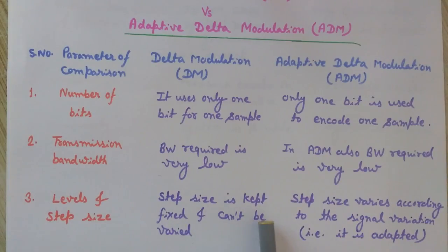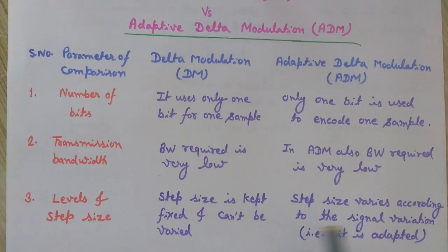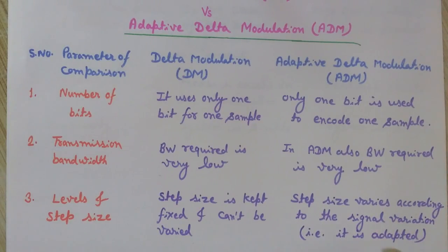The third point is the step size. In Delta modulation the step size is kept constant or fixed and is not varied, while in adaptive Delta modulation — as the name suggests — it is adaptive, so the step size is not fixed. It varies as per the variations in the signal, adapting to them, which is why it is called adaptive Delta modulation.